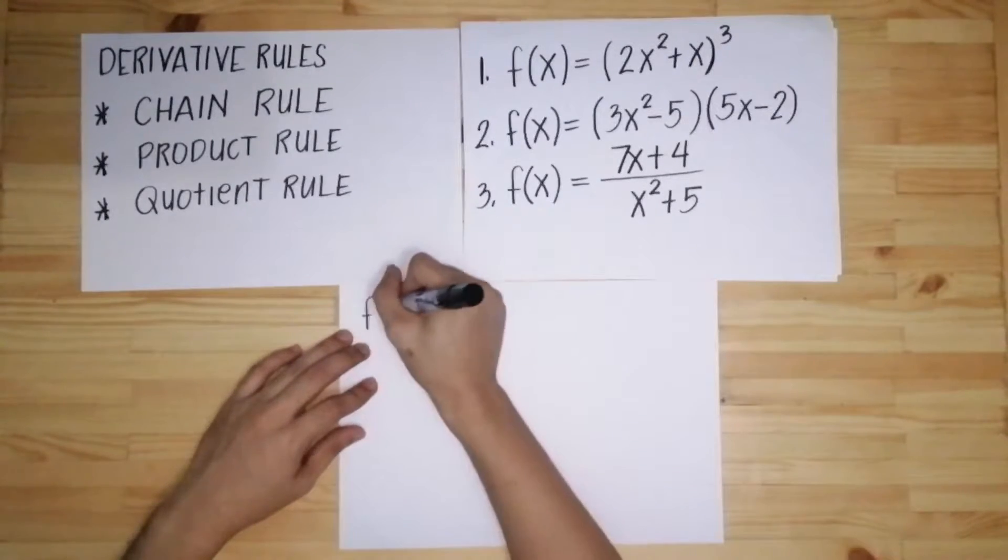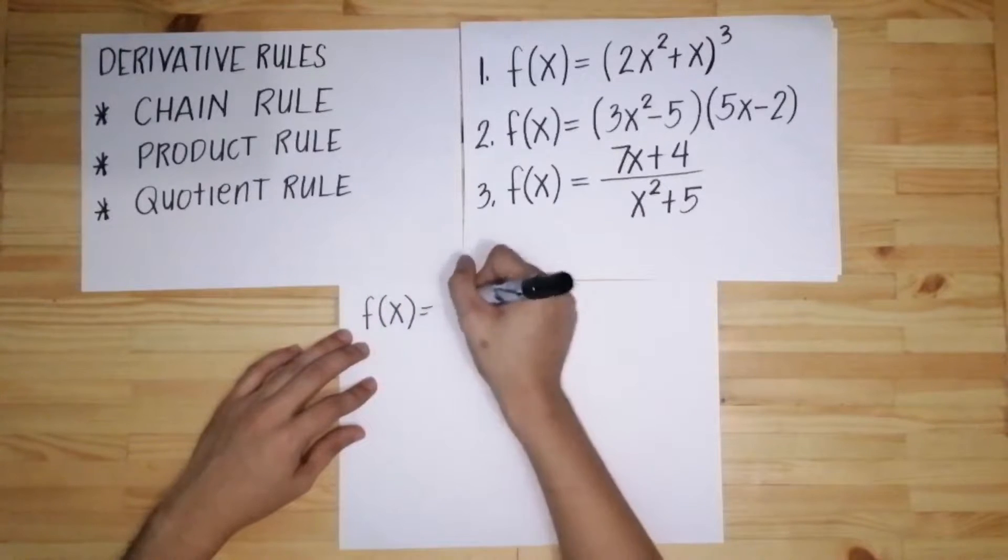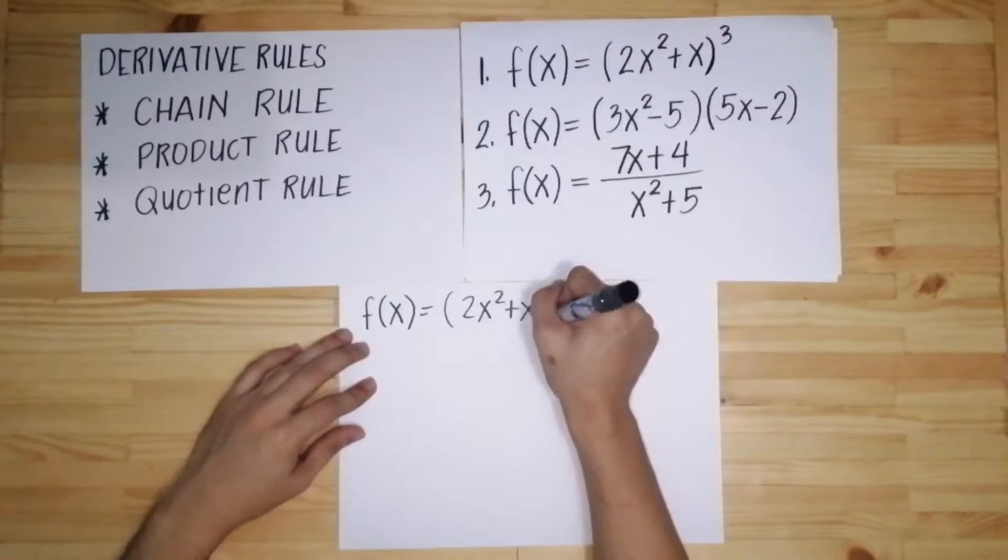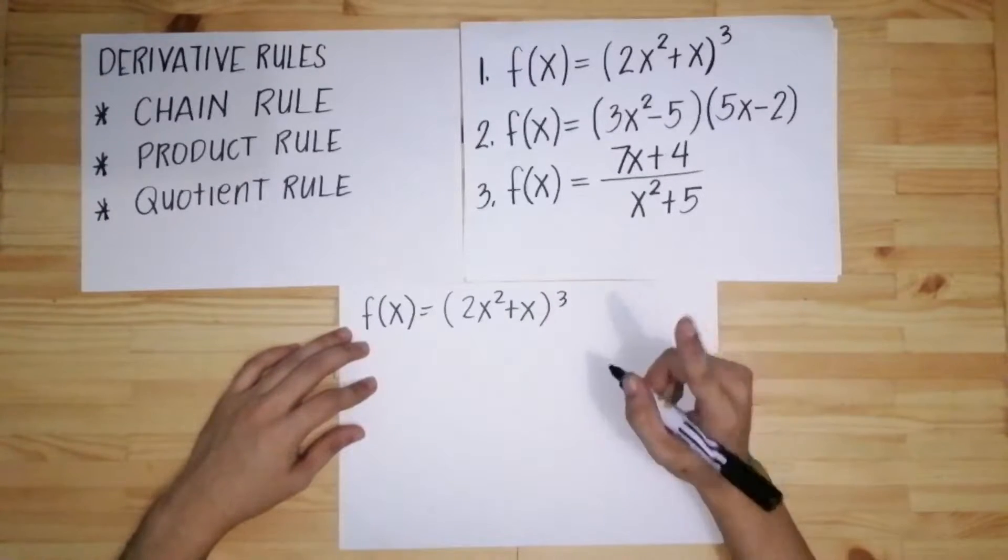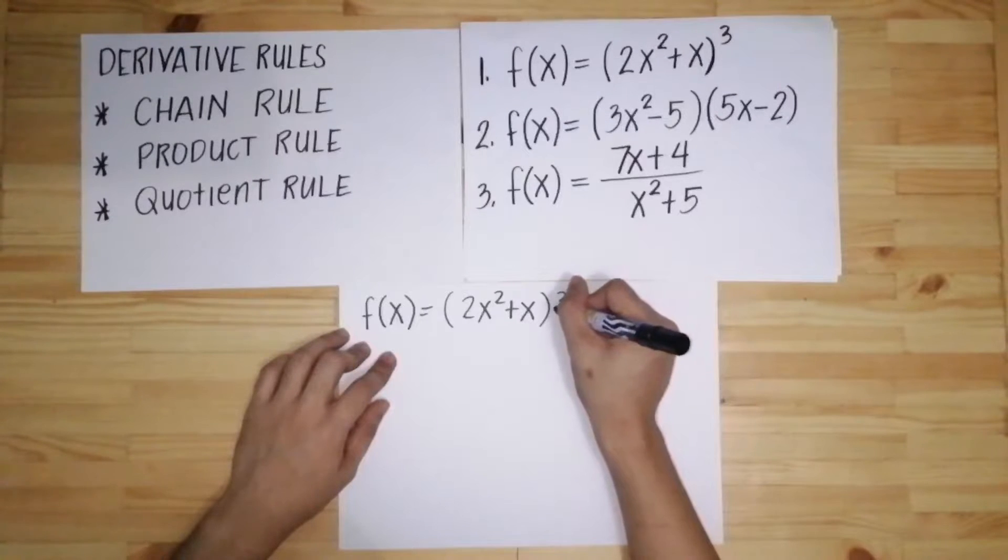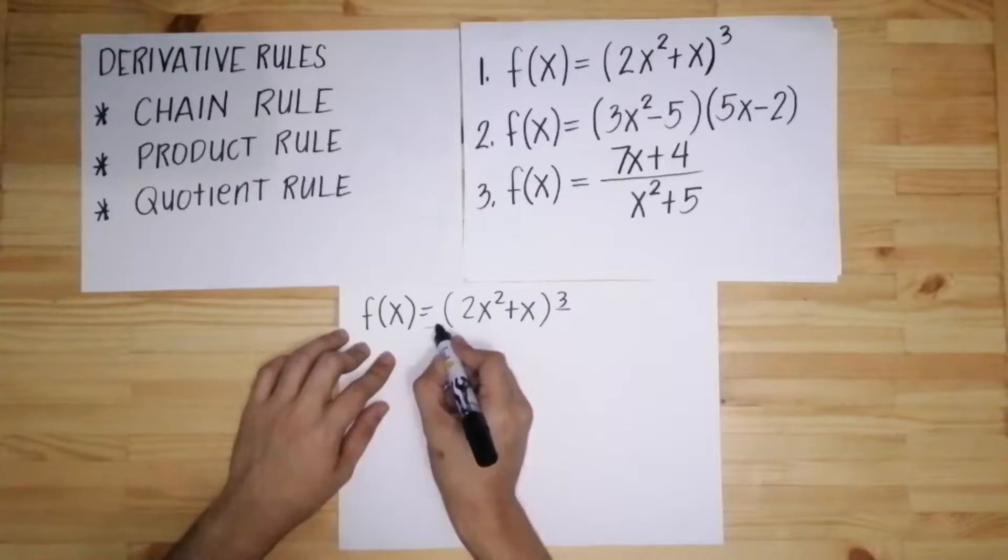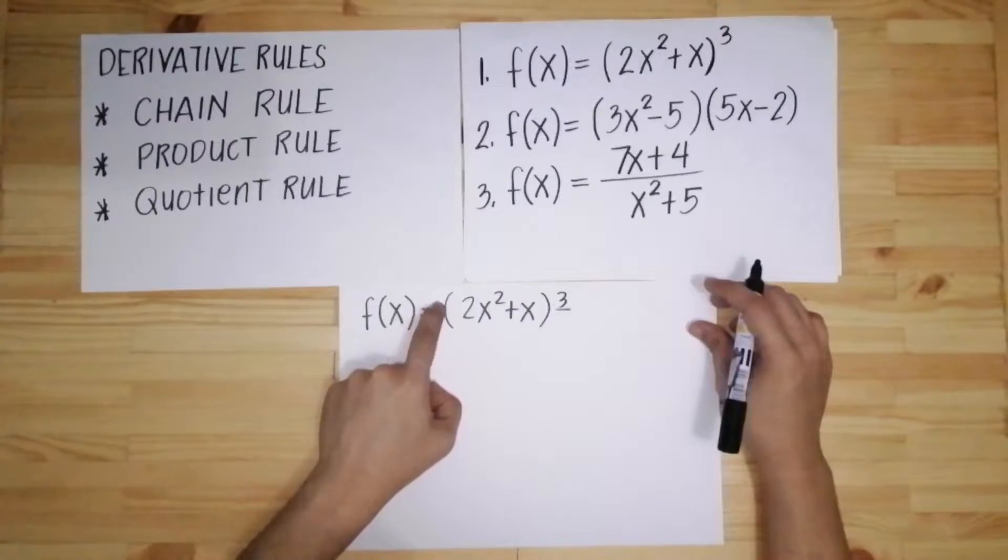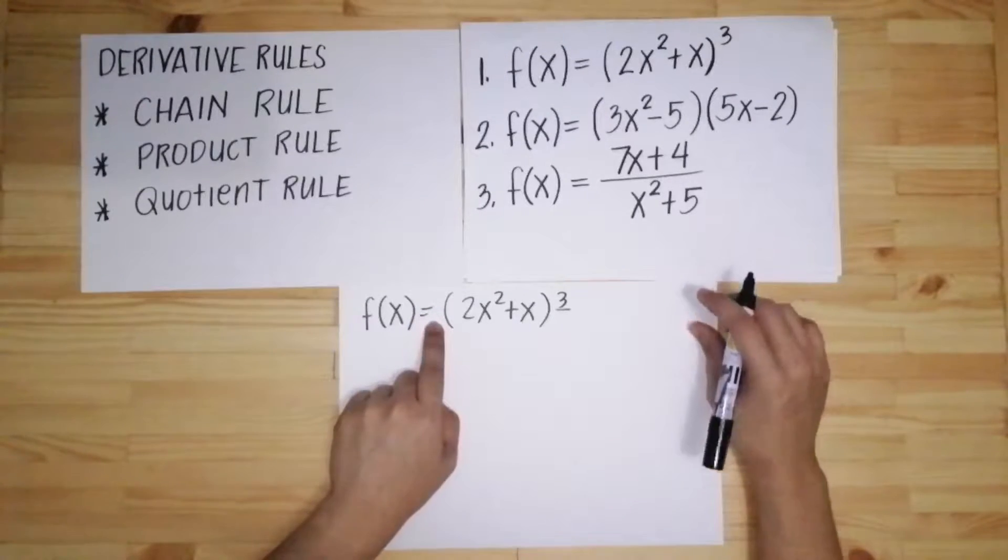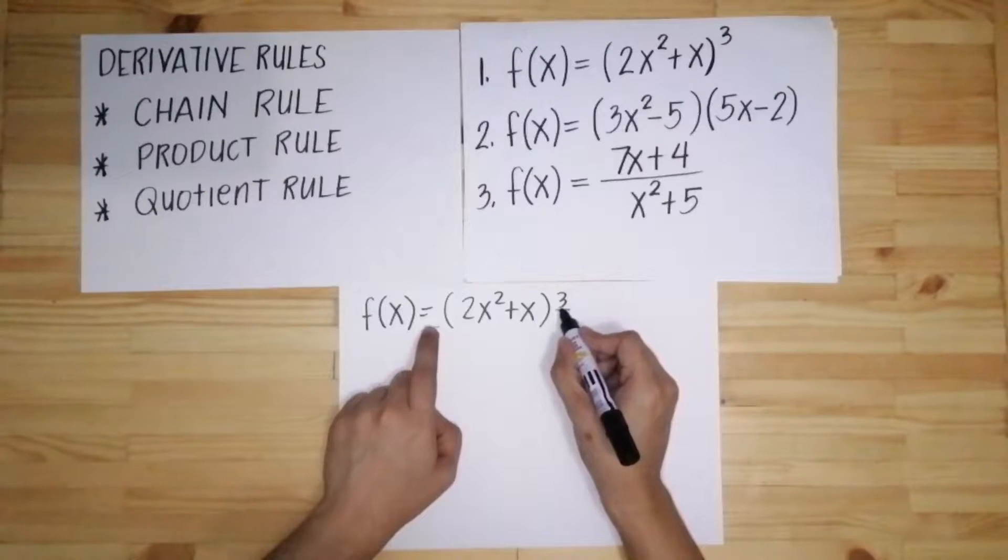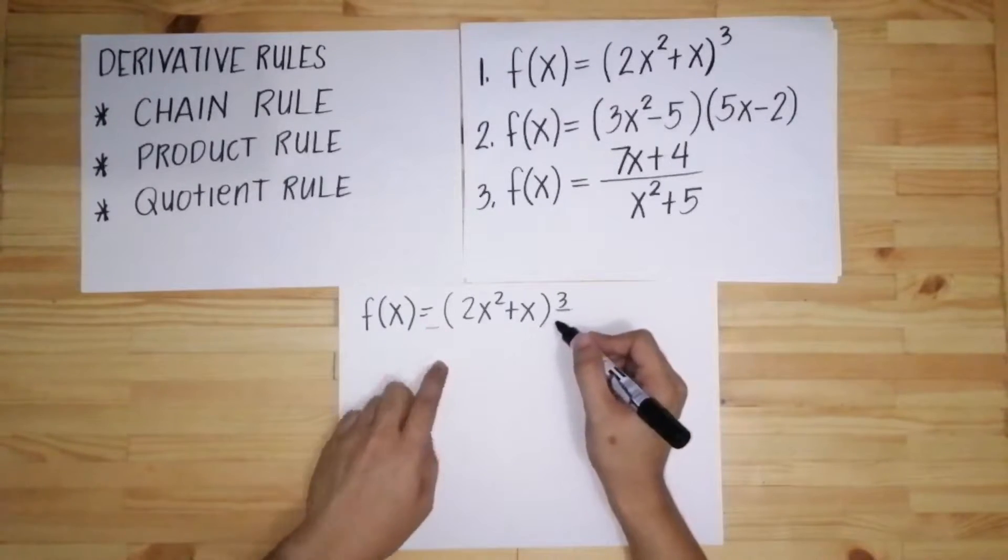So copy natin yung f(x), number one, equals quantity of 2x squared plus x raised to 3. The first step in the chain rule is to multiply the exponent here on the left side of the parenthesis. Ang gagawin mo, i-multiply mo yung exponent sa labas ng parenthesis. Pag walang number dyan, ang gagawin mo lang, bring down.